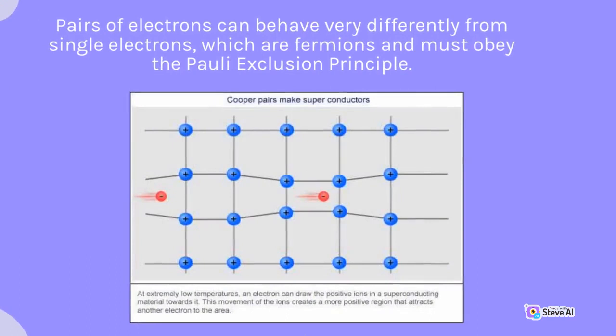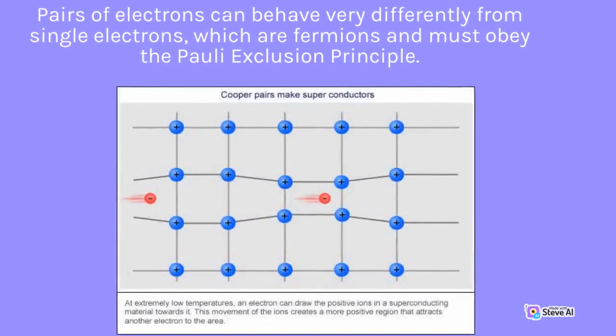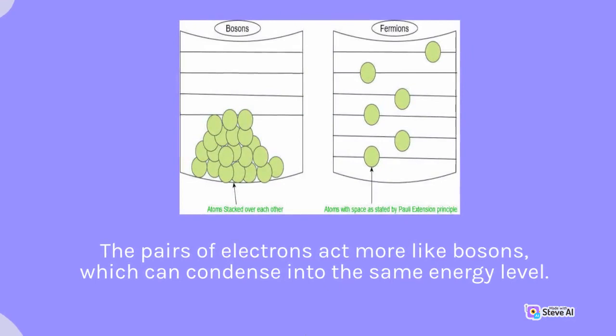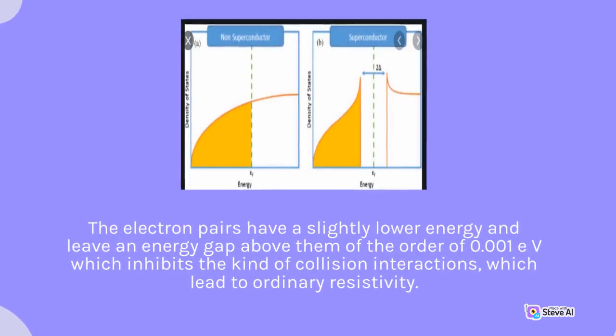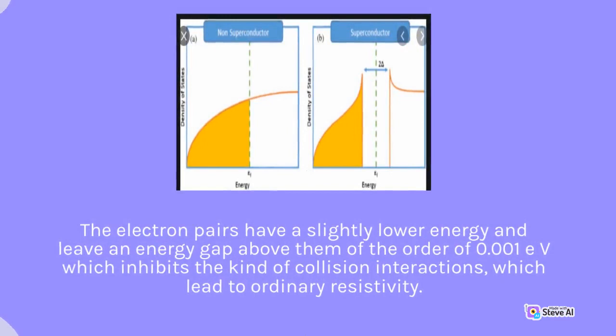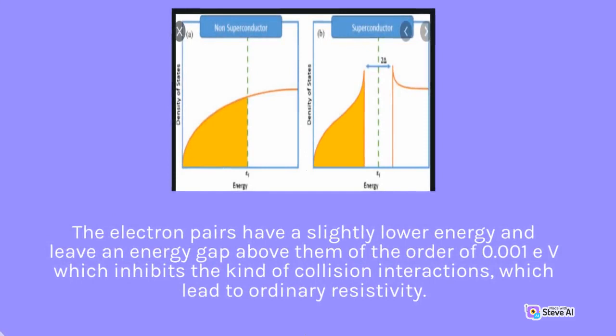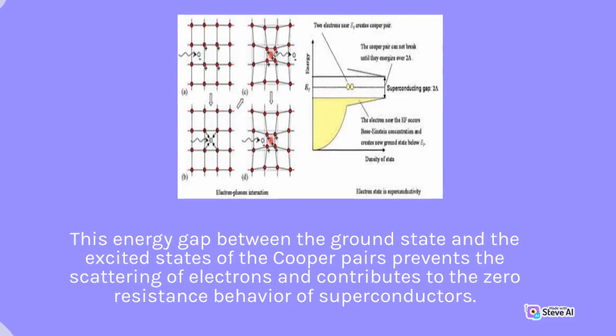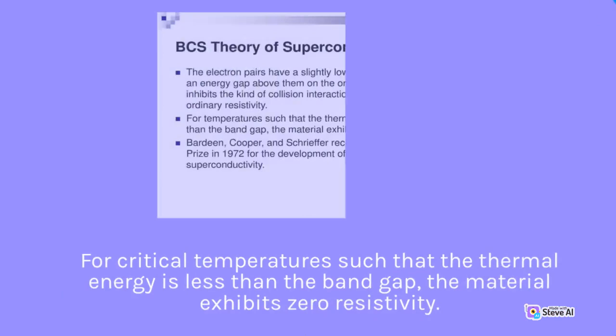Pairs of electrons can behave very differently from single electrons, which are fermions and must obey the Pauli exclusion principle. The pairs of electrons act more like bosons, which can condense into the same energy level. The electron pairs have a slightly lower energy and leave an energy gap above them of the order of 0.001 eV, which inhibits the kind of collision interactions that lead to ordinary resistivity. This energy gap between the ground state and the excited states of the Cooper pairs prevents scattering of electrons and contributes to the zero-resistance behavior of superconductors. For critical temperatures such that the thermal energy is less than the band gap, the material exhibits zero resistivity.